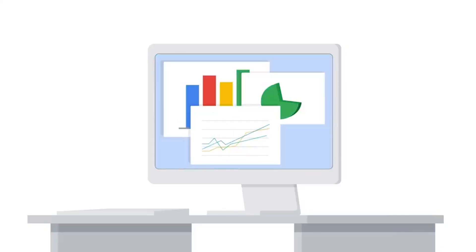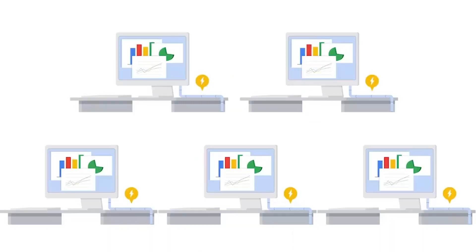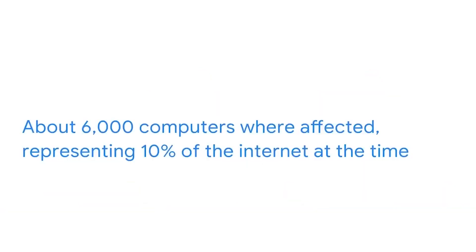Another influential computer attack was the Morris worm. In 1988, Robert Morris developed a program to assess the size of the internet. The program crawled the web and installed itself onto other computers to tally the number of computers that were connected to the internet. The program, however, failed to keep track of the computers it had already compromised and continued to reinstall itself until the computers ran out of memory and crashed. About 6,000 computers were affected, representing 10% of the internet at the time. This attack cost millions of dollars in damages due to business disruptions and the efforts required to remove the worm.